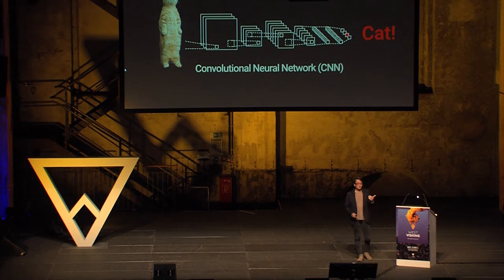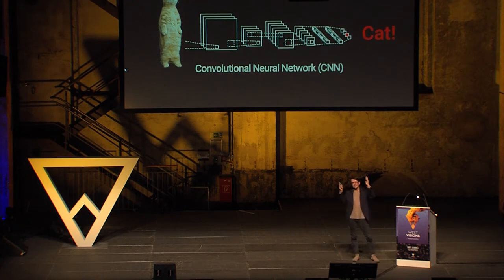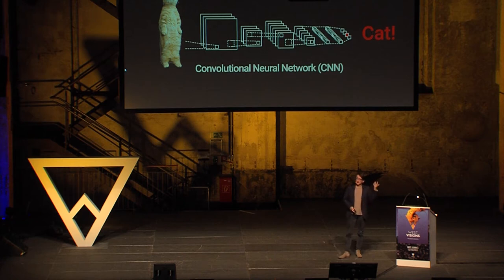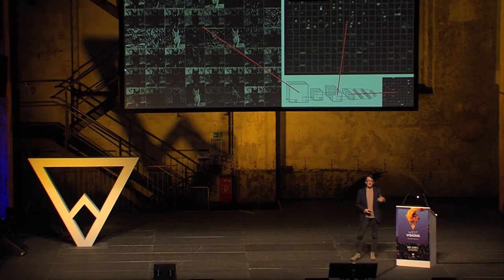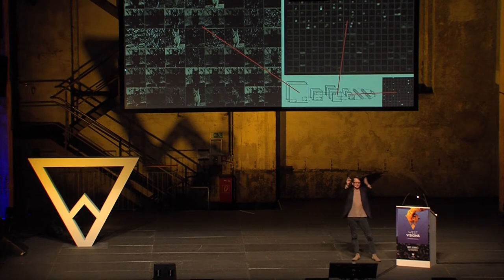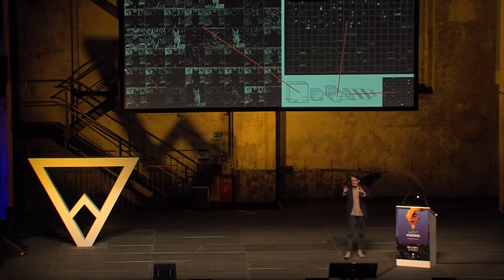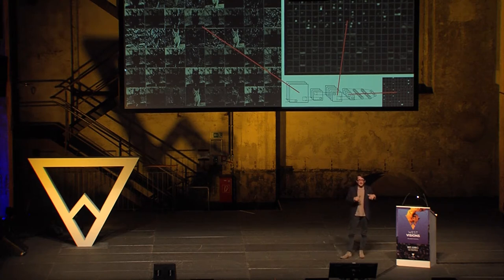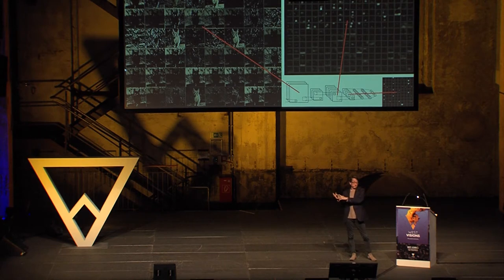To do that, we use convolutional neural networks — linked layers that contain neurons where each layer breaks down the image further and further, from superficial features like pixels down to something where it thinks it sees an eye or a wheel. If you look inside a neural network when you send in an image, it actually looks a lot like bad Photoshop filters. The further down it goes, it first looks for edges, then combines edges into circles, then maybe recognizes a face.